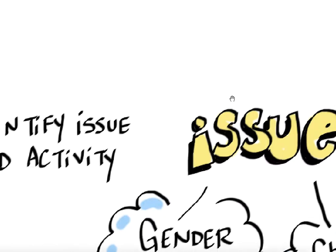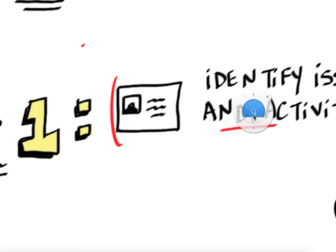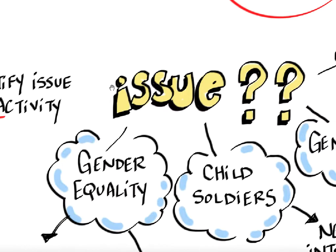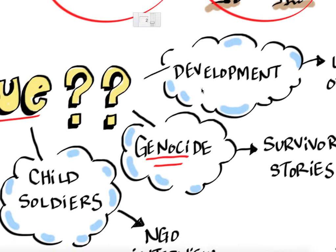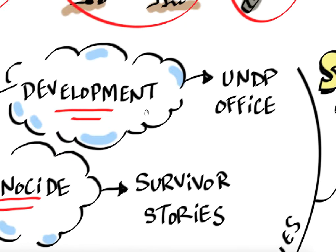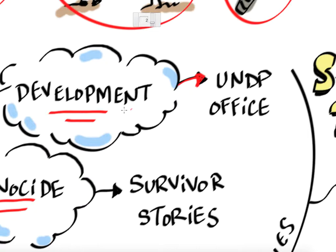The first step is to identify an issue and activity, which is probably the most difficult part. Once you have that, you're ready to go. You have to think of an issue that is important to you — is it gender equality, something to do with child soldiers, genocide in the Rome Statute, or something to do with development? Identifying that issue first will help you, and then you can move past that to an actual engagement activity.